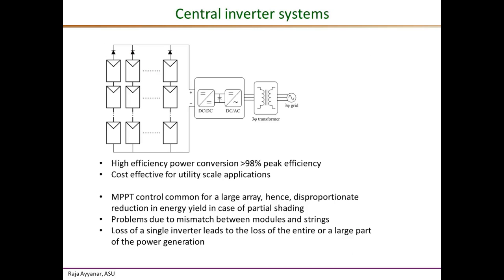Central inverters tend to have the highest efficiency among all inverter types, with recent products exceeding 98% peak efficiency. They are also the most cost-effective solution for utility-scale applications due to fewer inverters needed. However, drawbacks include a single MPPT for a large array, so partial shading or module mismatch causes disproportionate energy losses. Additionally, loss of a single inverter can take down a very large section of the power plant.